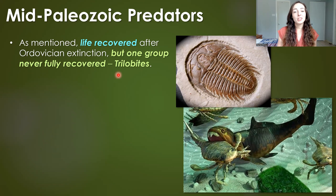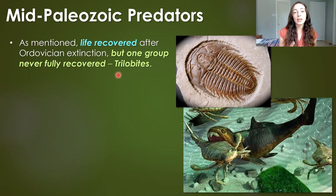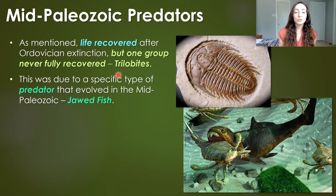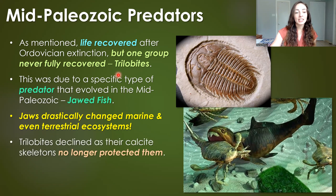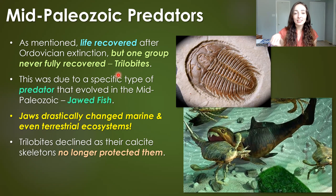One group that never fully recovered after the early Paleozoic was trilobites, and this was due to a specific predator that evolved in the mid-Paleozoic: jawed fish. Jaws drastically changed marine and even terrestrial ecosystems. Trilobites declined because their calcified mineralized skeletons no longer provided adequate protection — they could still be crushed by strong enough jaws.